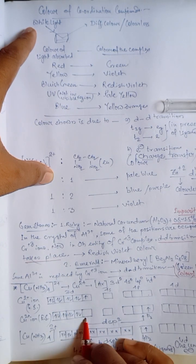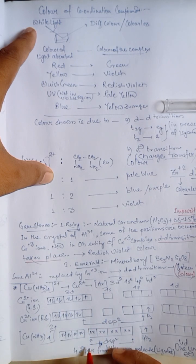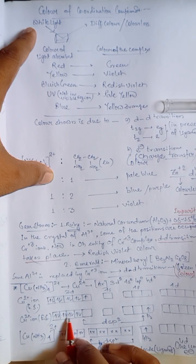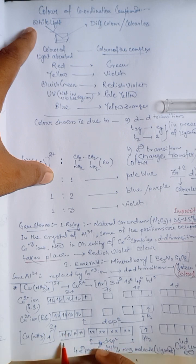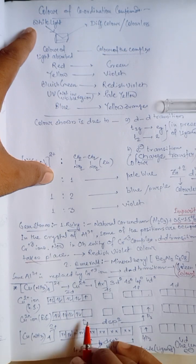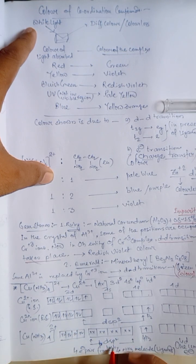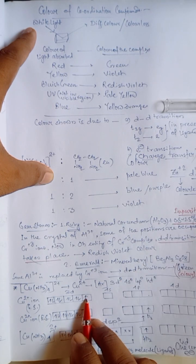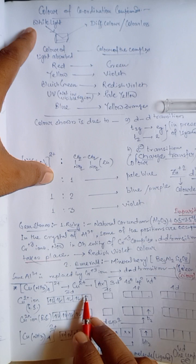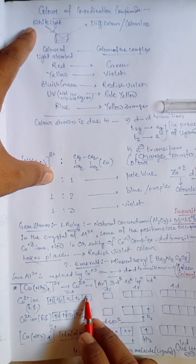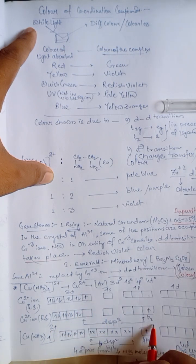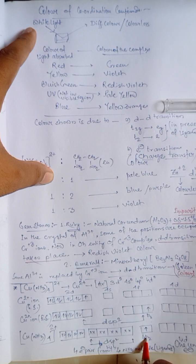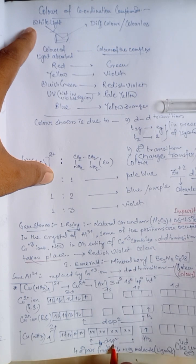So, one vacant d orbital is available for dsp2 hybridization. So, four paired orbitals electrons, that is, 3D, and one d is vacant, is used for dsp2 hybridization. And, this P, which d orbital is occupied by your single electron. This single electron jumps from 3D orbital to 4Pz. And, we get four dsp2 hybridized orbitals.